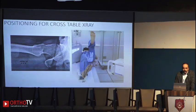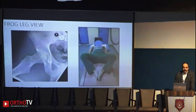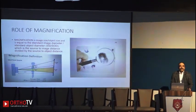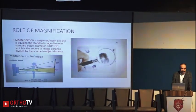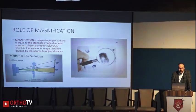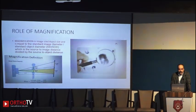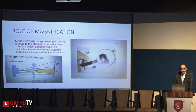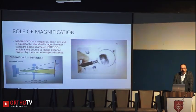There are two types of lateral X-rays: the cross-table lateral and the frog-leg lateral. Now what is the role of magnification? It is defined as image size divided by object size, and is equal to the source-to-image distance divided by the source-to-object distance.